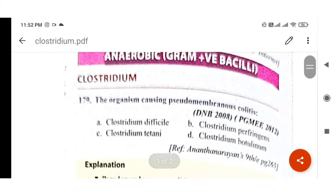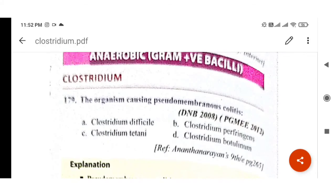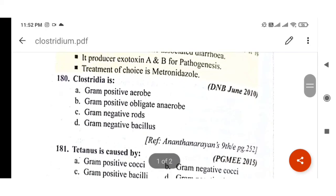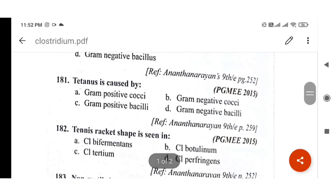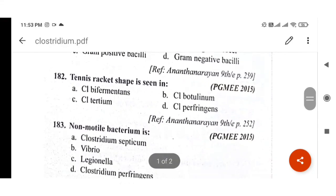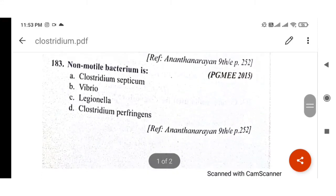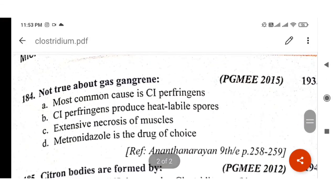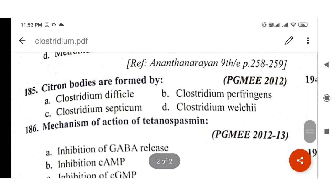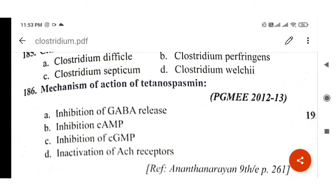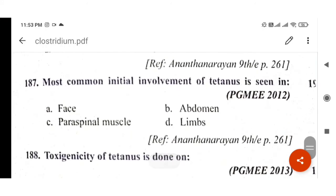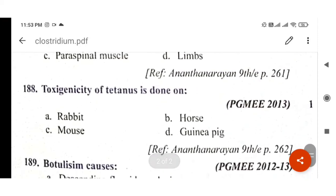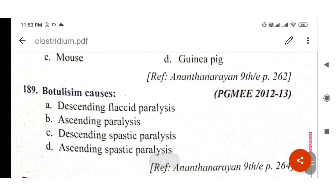Let us revise: Pseudomembranous colitis — Clostridium difficile. Clostridium is gram-positive obligate anaerobe. Tetanus — gram-positive bacilli. Tennis racket shape — Clostridium tertium. Non-motile bacterium — Clostridium perfringens. Not true about gas gangrene — metronidazole is not drug of choice. Citron bodies — Clostridium septicum. Tetanospasmin mechanism — inhibition of GABA release. Initial involvement of tetanus — face. Toxigenicity of tetanus — done on mouse. Botulism — descending flaccid paralysis.